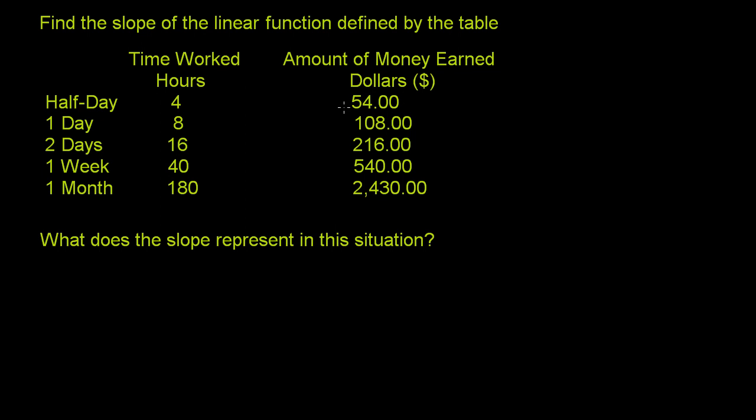And then they tell us how much money we make in each of those time periods. If we work four hours, we make $54. If we work eight hours, we make $108, so forth and so on. And then they say, what does the slope represent in this situation?